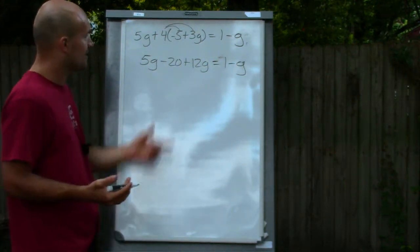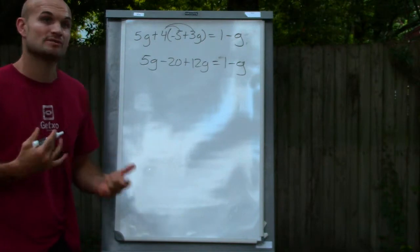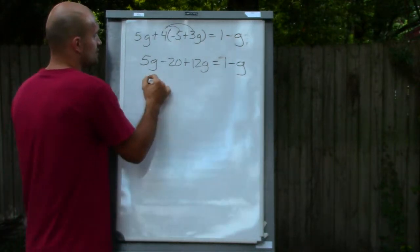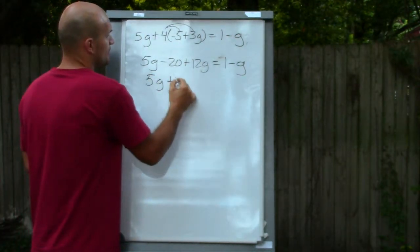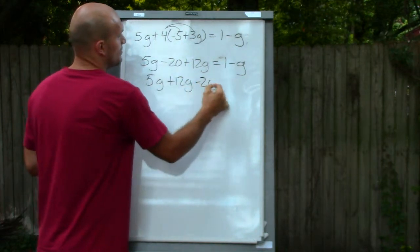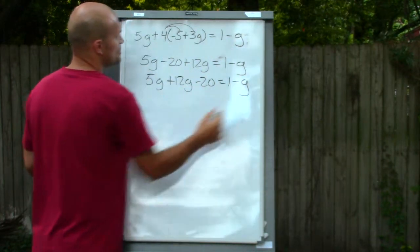So I do the distributive property and then on the left side, now what I'm going to do is I'm going to rearrange the terms. So I have 5g plus 12g minus 20 equals 1 minus g.